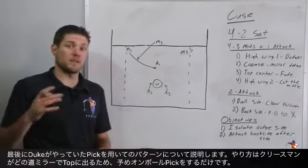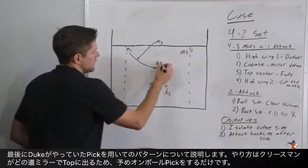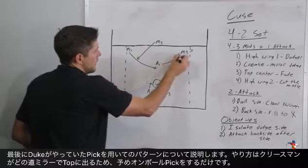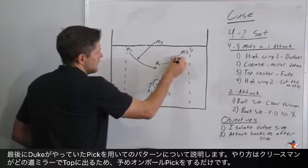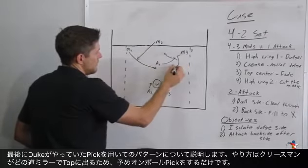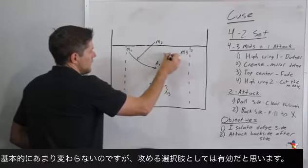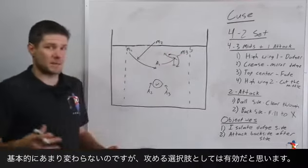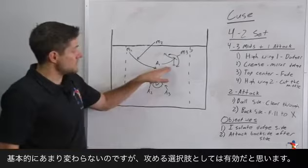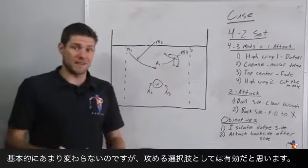The final little wrinkle with the Duke offense is that they were starting to throw up picks here where if the player used the pick he would still mirror to the top and if he decided to sweep over using the pick he would mirror the other way. So it was basically getting into the same set but they were using an up pick in order to get into that set.